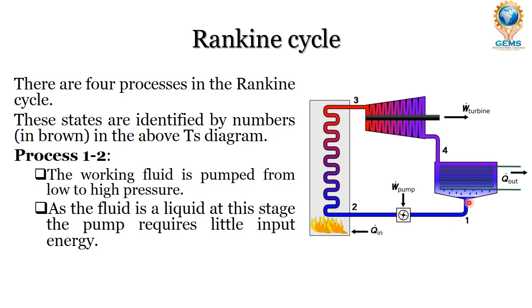Process 1 to 2 is from the exit of the condenser to the inlet of the boiler, which is done by the pump. The working fluid is pumped from low to high pressure. As the fluid is in the liquid state at this stage, the pump requires very little input energy.